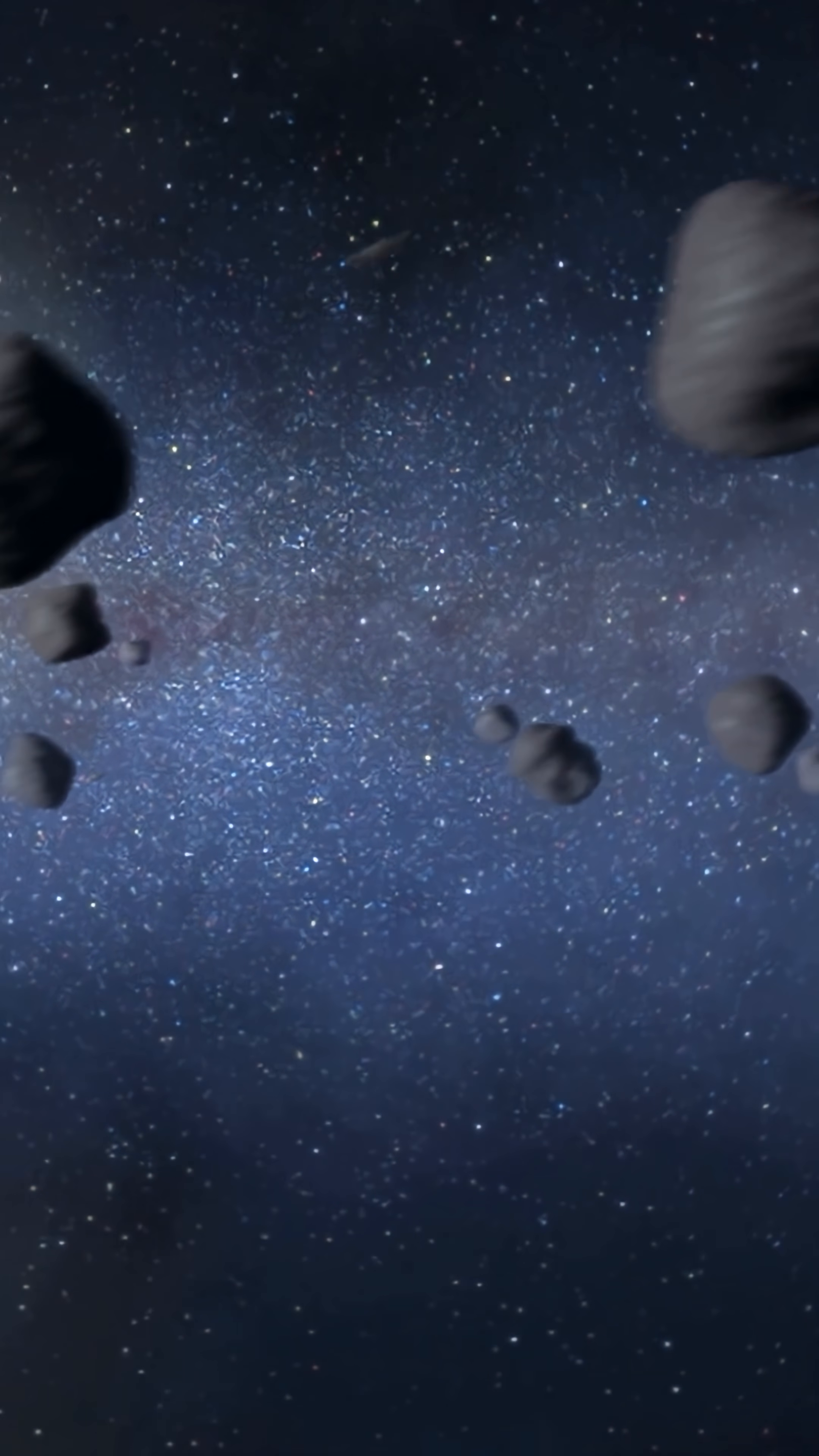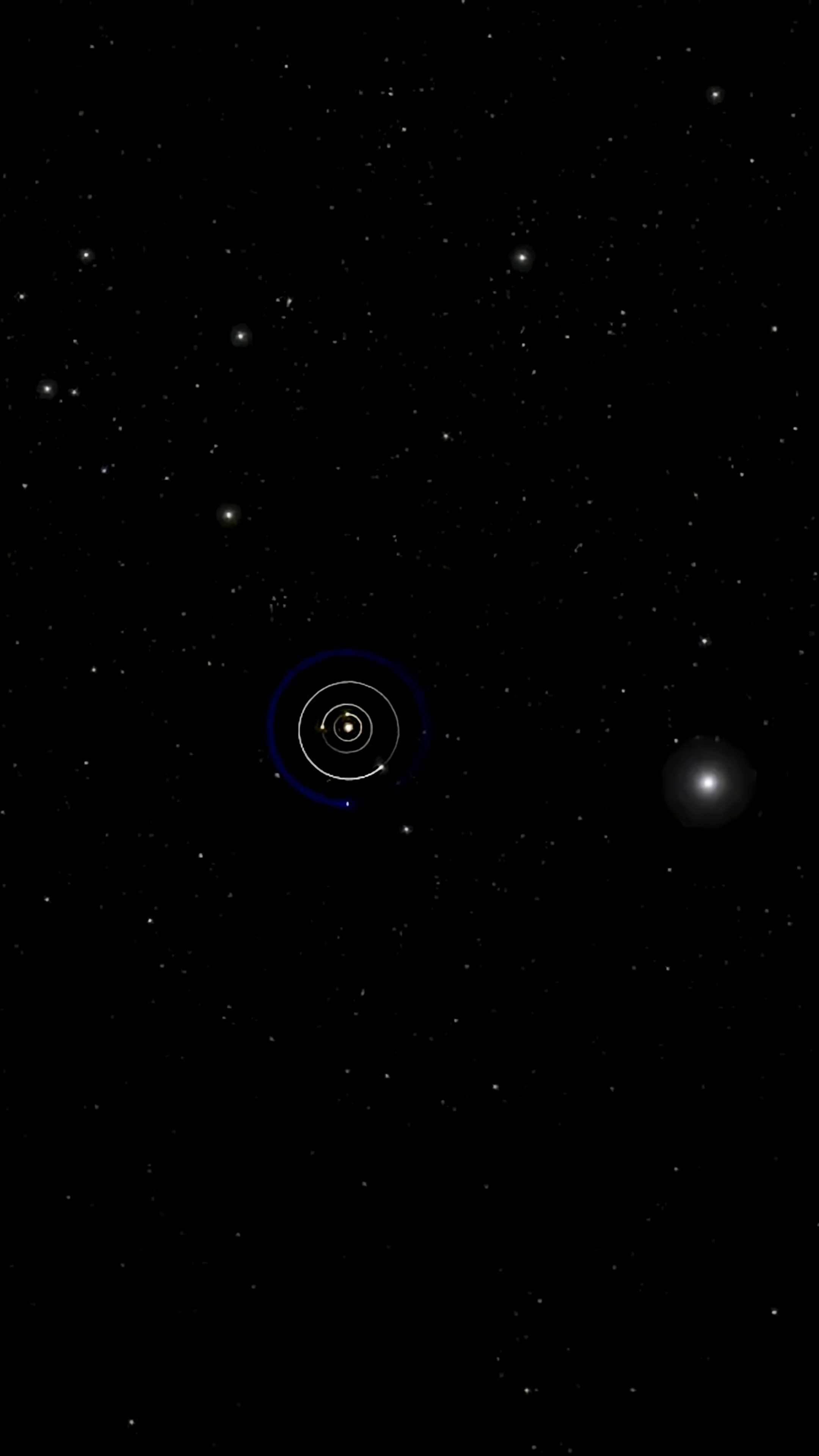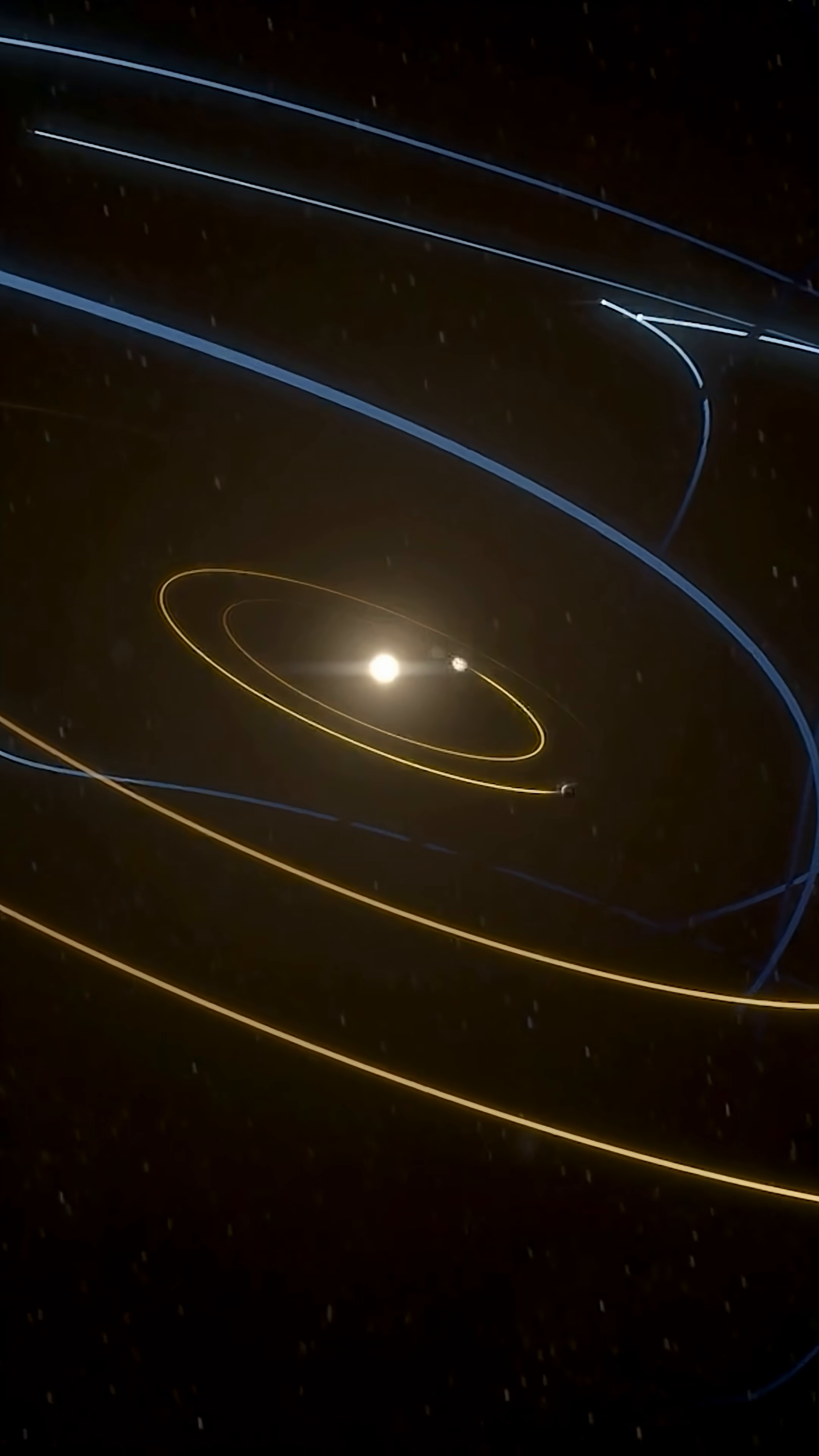Out at the farthest edge of the solar system, a collection of small icy worlds, objects in the Kuiper belt and even farther beyond, in a region filled with what are known as trans-Neptunian objects, were all tracing surprisingly similar paths through space.